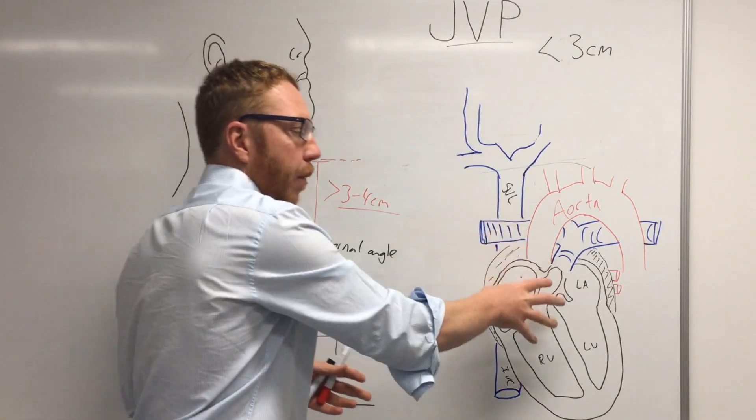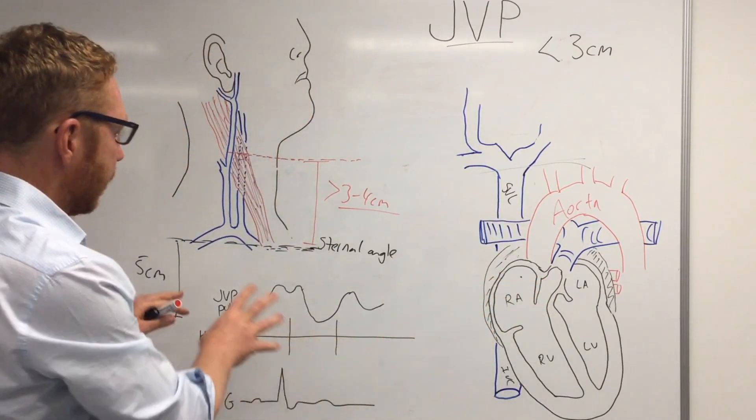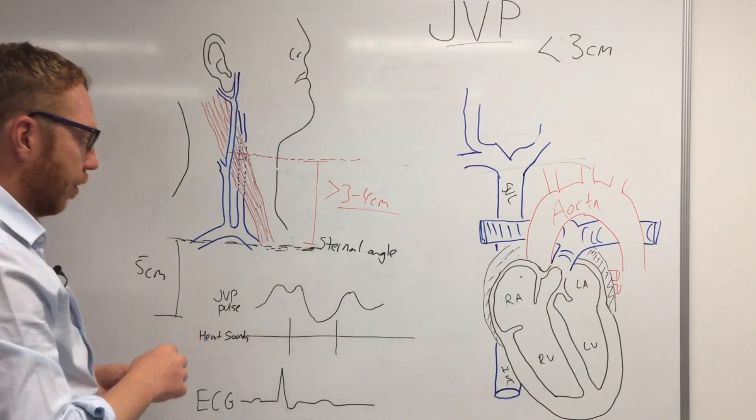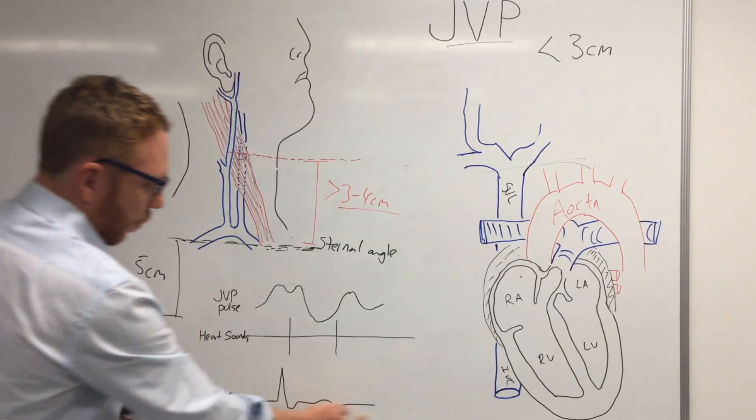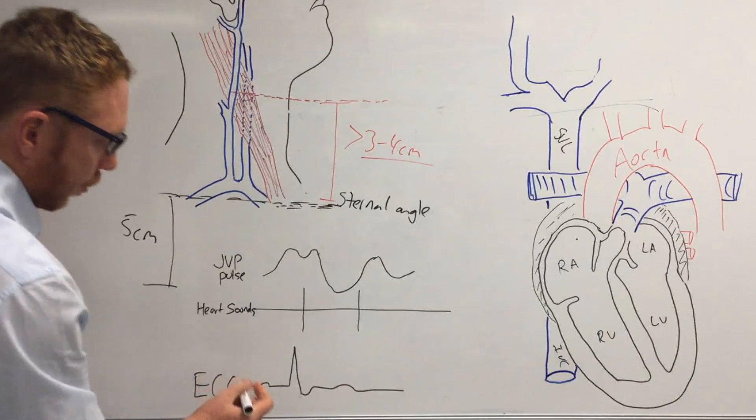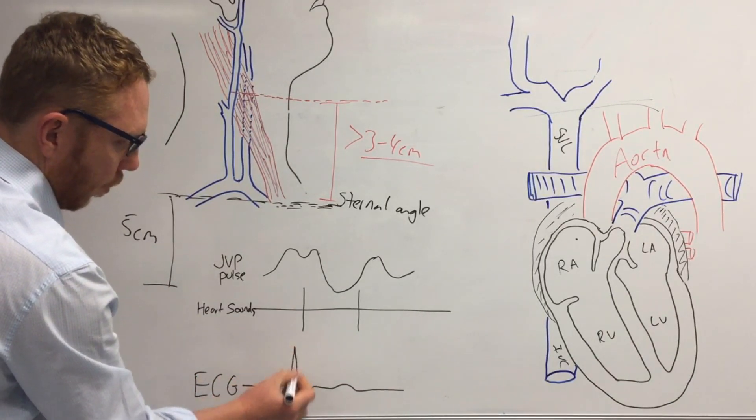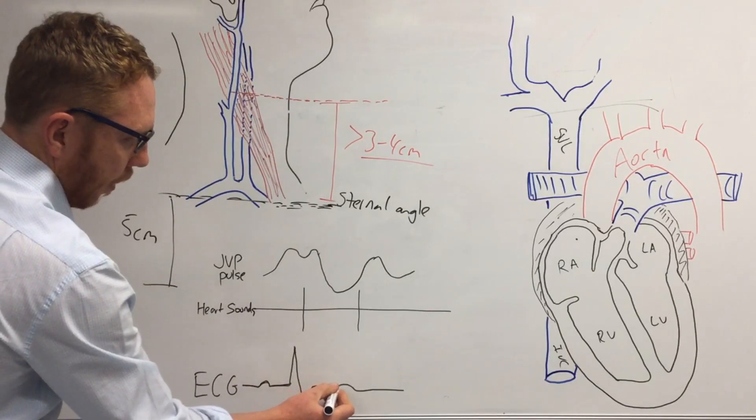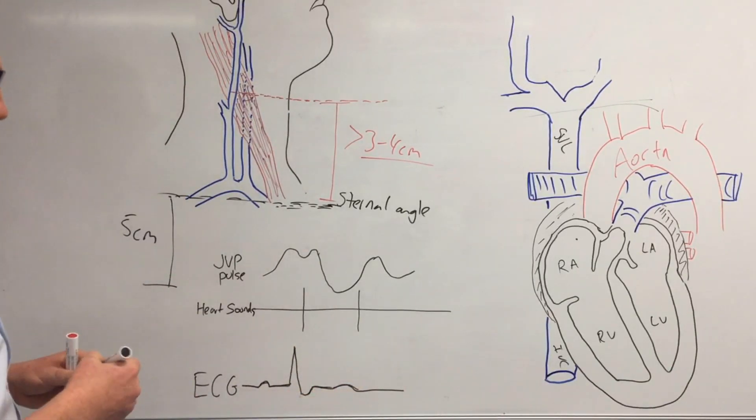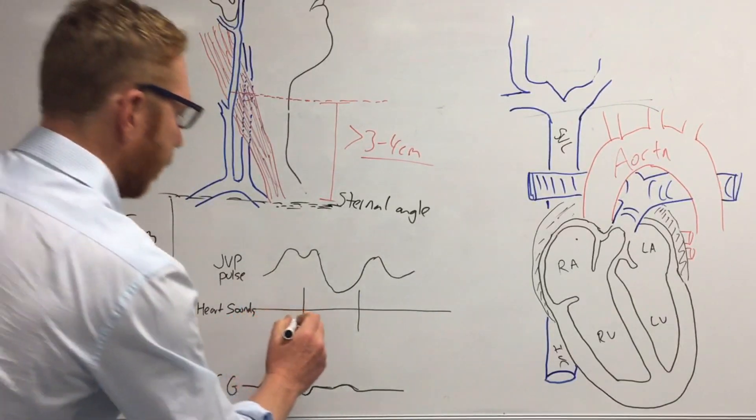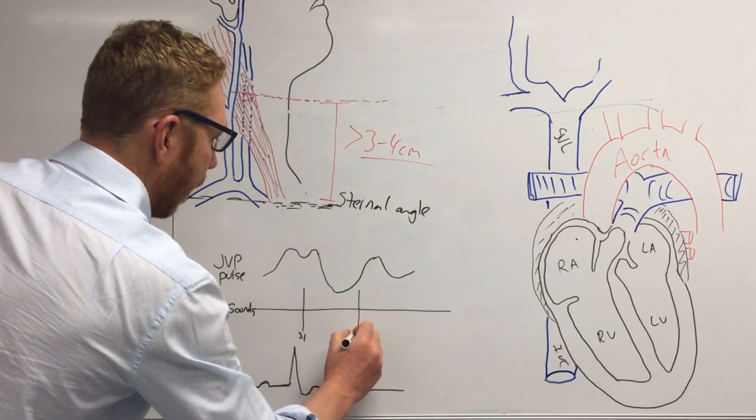Now before we go into those cases let's just have a quick look at how the physiology is occurring. So down on this trace what we have is the ECG, so you can see the P wave, the QRS, back into the T wave. Now with the heart sounds we can see we've got two main heart sounds and this is going to be your S1 and S2.